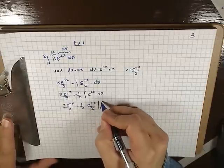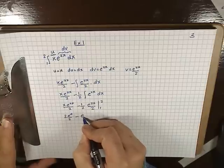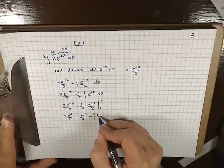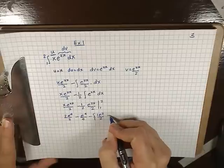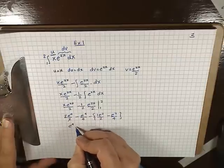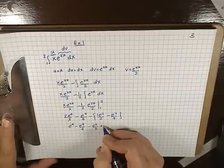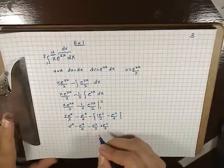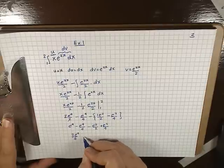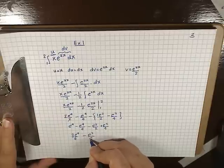Now let's put the limits from 1 to 2. Putting 2 in, we get 2e^4 over 2 minus e^4 over 4, minus — putting the lower limit 1 in — we get e^2 over 2 minus e^2 over 4. The 2's cancel out, giving e^4 minus e^4 over 4 minus e^2 over 2 plus e^2 over 4, which simplifies to 3e^4 over 4 minus e^2 over 4. And this is the result.